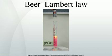Equations. The law states that there is a logarithmic dependence between the transmission of light through a substance and the product of the absorption coefficient of the substance and the distance the light travels through the material, i.e., the path length. The absorption coefficient can, in turn, be written as a product of either a molar absorptivity of the absorber and the molar concentration c of absorbing species in the material, or an absorption cross-section and the density n of absorbers.